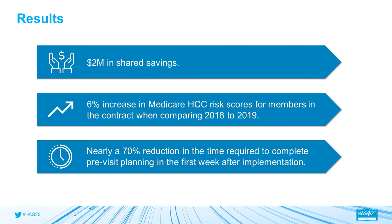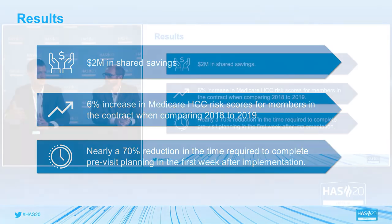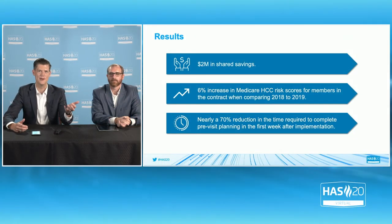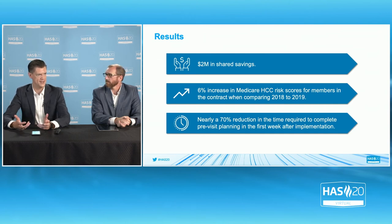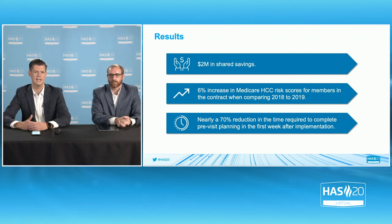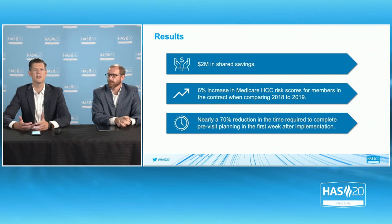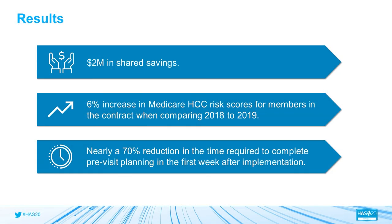On results, especially from 2019: looking at a variety of the contracts and arrangements we're involved in, we've seen — we'd like to think as a result of our solutions, but more importantly as a result of the engagement of people working together collectively, it's not just the analytics — $2 million in shared savings, a 6% increase in Medicare HCC coding from 2018 to 2019, and nearly a 70% reduction in staff time needed to deal with the administrative burden associated with quality metrics. Significant outcomes as a result of all the hard work.